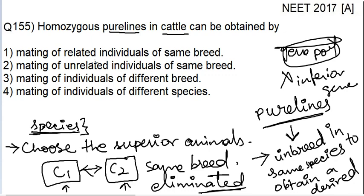So, to produce homozygous pure lines in cattle — or pure lines in any animal or species — you have to take genetically related individuals of the same breed. Mating of related individuals of same breed will give rise to homozygous pure lines. Our correct option is option number 1. Mating of unrelated individuals of the same breed is not pure lines — that is crossbreeding. So the correct option is option 1: mating of related individuals of same breed.